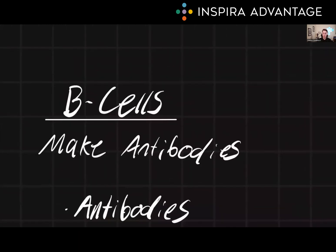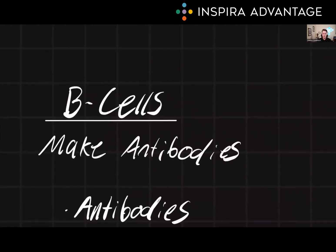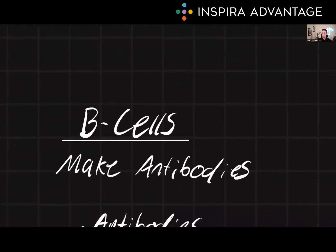Now let's take a look at B cells. The main function of B cells that you need to understand for the MCAT is that they make antibodies, and the antibodies in turn help mark pathogens for destruction.